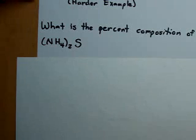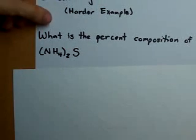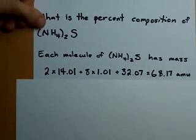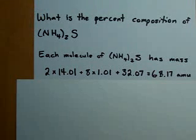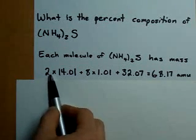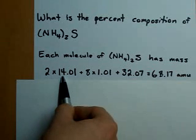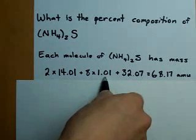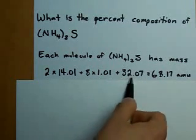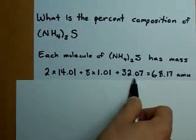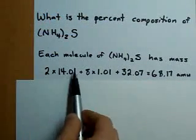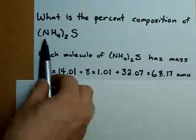We start this the exact same way we start any percent composition question, by calculating the mass of one molecule of this. We do that by adding up the masses of each of the constituent atoms. We have two nitrogens, and each nitrogen weighs 14.01 atomic mass units. We have eight hydrogens, each weighing 1.01, and we have one sulfur, which weighs 32.07. These numbers are read off of the periodic table, and these numbers are calculated from the molecular formula.